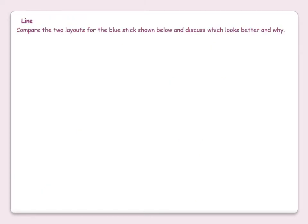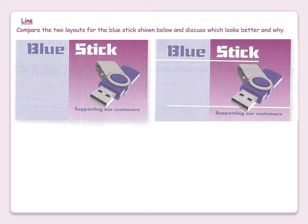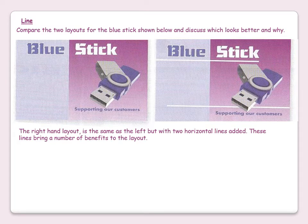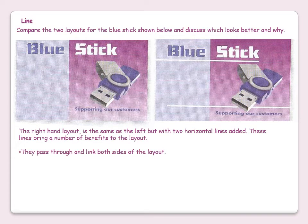Let's start with line. Compare the two layouts shown below for the Blue Stick and discuss which looks better and why. The right-hand layout is the same as the left but with two horizontal lines added. These bring a number of benefits to the layout. The white lines pass through and link both sides of the layout together, so instead of looking like two separate items, now it links them together. This is what's called unity.